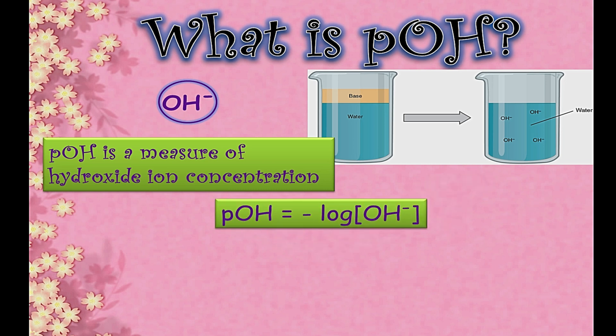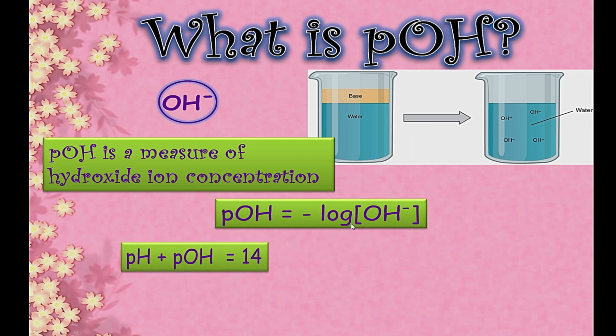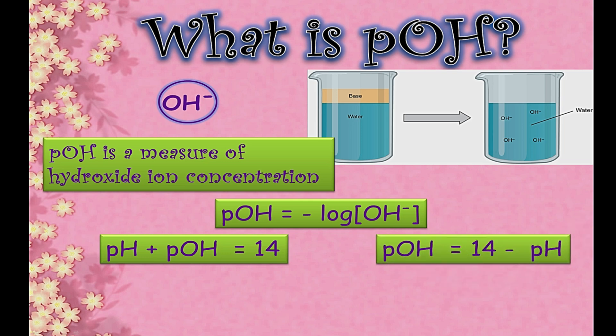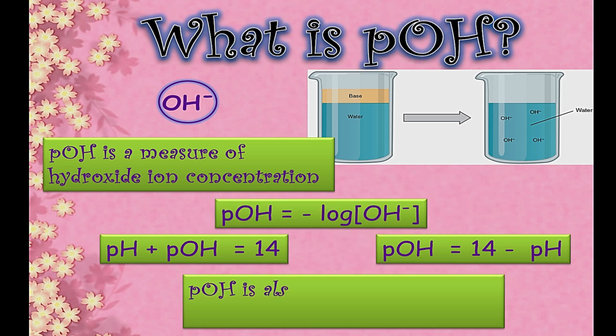pOH can be calculated using the formula: pOH = −log[OH⁻], where the square brackets represent concentration. It can also be calculated using the formula pH + pOH = 14. If you are given the pH value, you can easily calculate pOH: pOH = 14 − pH. pOH is also used to express the basicity of a solution.